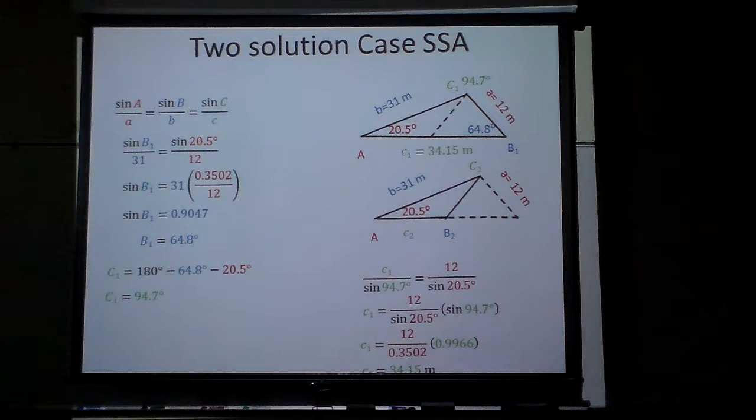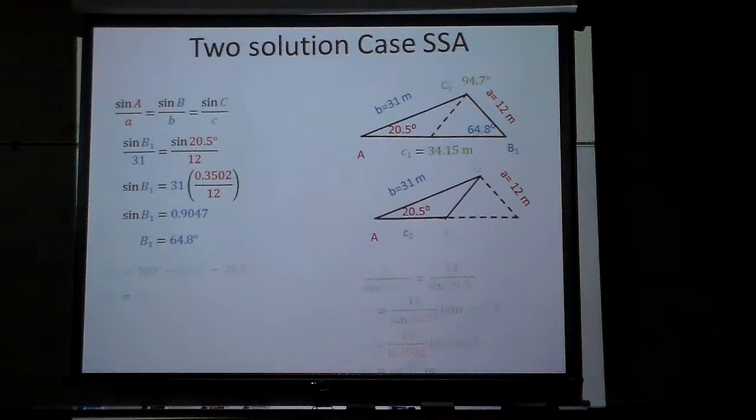Now what happens is this, okay? On the second one, notice I found B1 is 64.8. And if you go to your calculators and you do sine of 64.8, you get 0.9047. But remember, that gave me an acute angle. And this one here, B1 is right here. And if this is B2, it would be obtuse. So what I need to do is this.